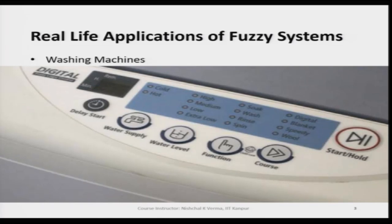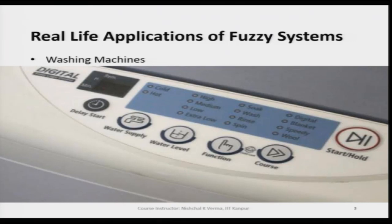In this washing machine, the fuzzy logic controller takes inputs from the users in terms of linguistic variables — like 'cold', 'hot', then 'high', 'medium', 'low', 'extra low', and for function 'soak', 'wash', 'rinse', 'spin'. Instead of crisp numeric inputs, the user feeds these linguistic values and the controller produces the control output, which in turn helps in managing the performance of the machine.